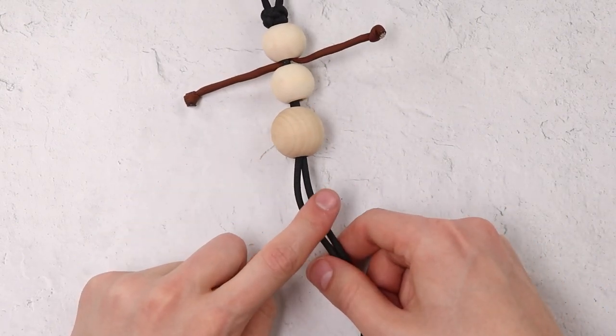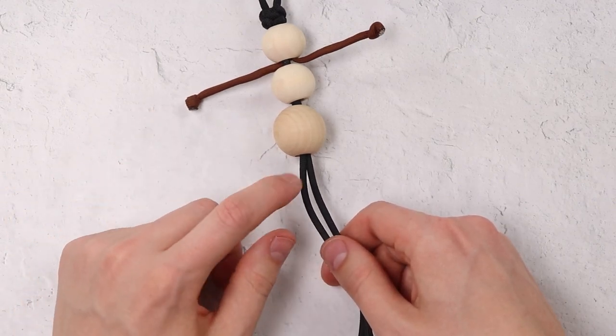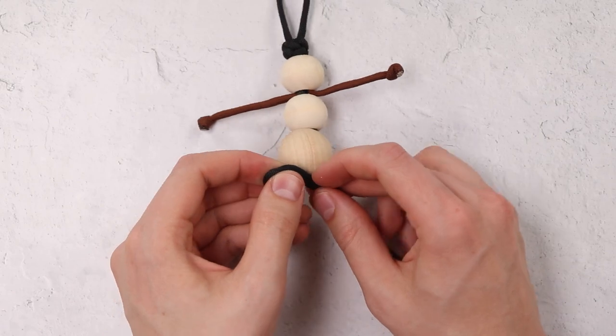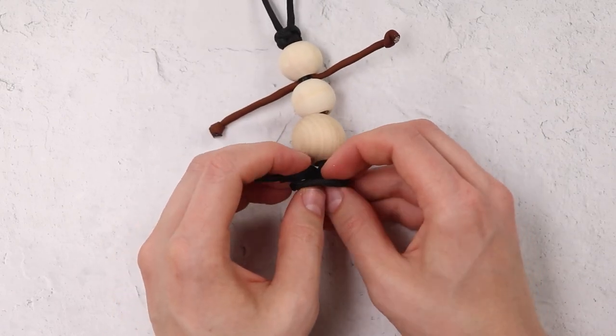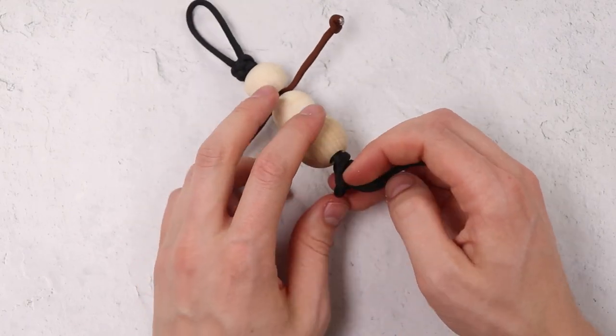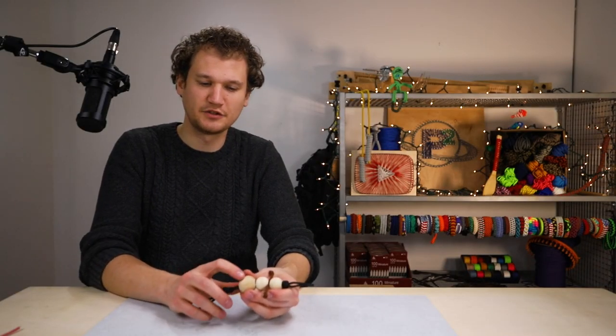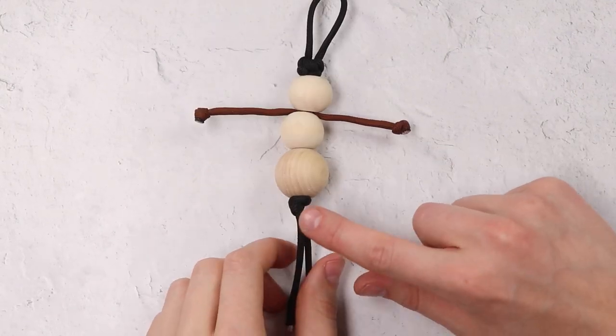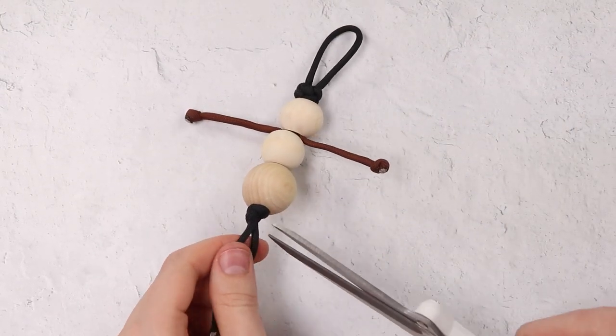And now we can tie just an overhand knot, or again a fancier knot, in the bottom to keep all those beads in place. You want to make that knot as tight as you can to the snowman's body so that we don't have any gaps in between. Then you can go ahead and clip those ends as well.